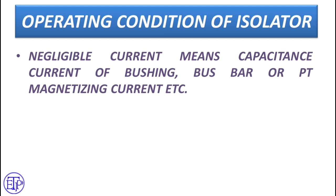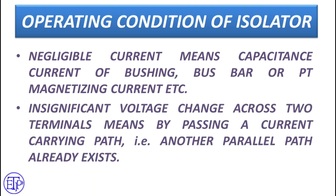What does negligible current mean? Negligible current means capacitance current of bushing or bus bar, or PT magnetizing current, etc. These currents could be directly broken or made by the isolator. And insignificant voltage change across two terminals means you are adding a bypass path to the current — that means another parallel path of current already exists. Under this condition, you can also operate the isolator.